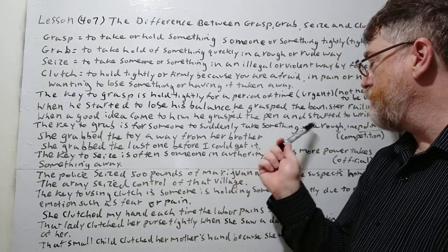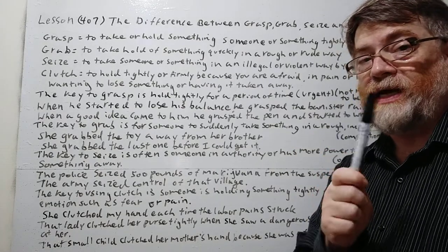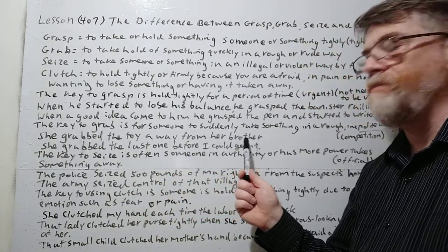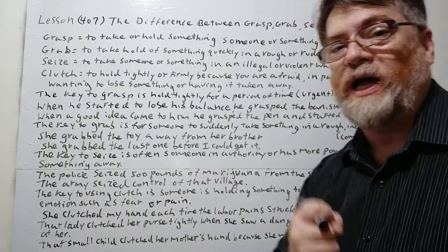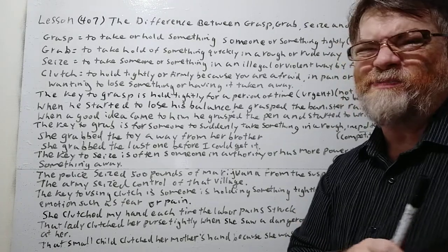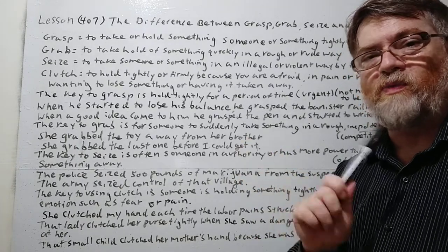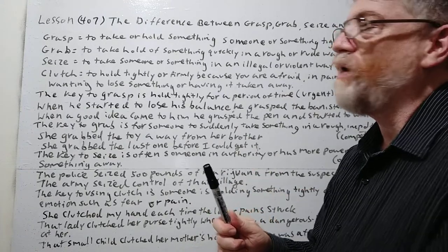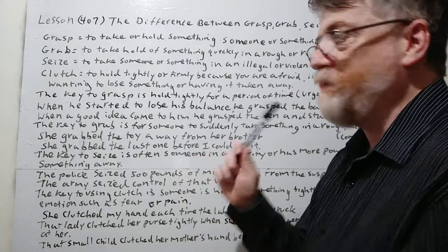Grab is for someone who takes something suddenly in a rough or impolite way, or in the context of competition or sports. For example: she grabbed the toy away from her brother — that's in a very rude, impolite way, one child grabbing something away from another. We would usually say grab here; grasp is not as likely. Seize is usually someone in authority, and here they're on the same level. Clutch doesn't apply because there's no pain or strong emotion, so grab is the most common choice.